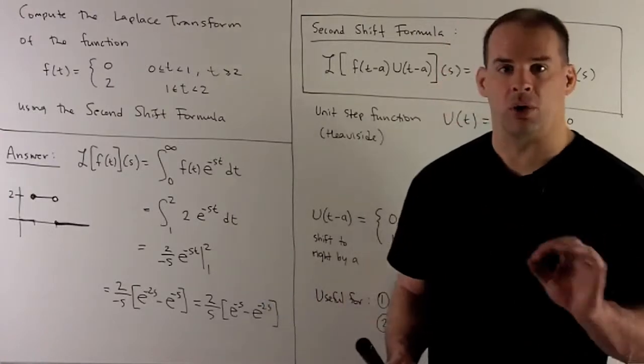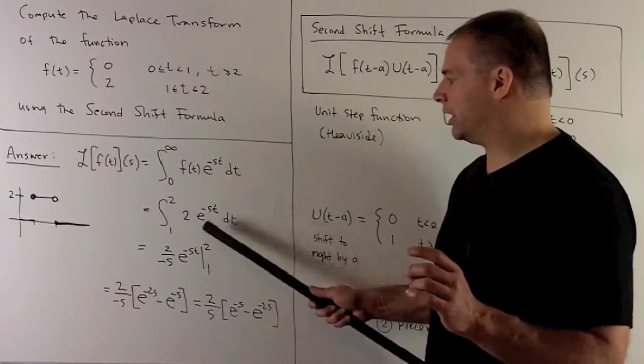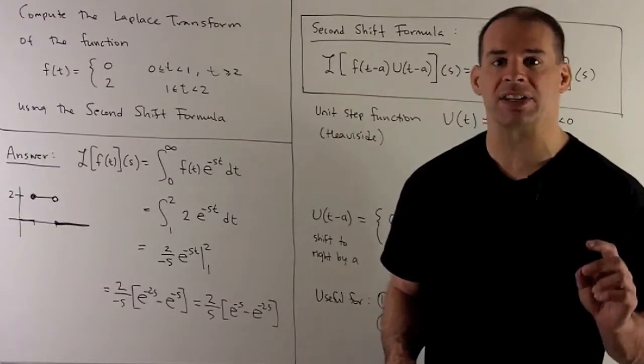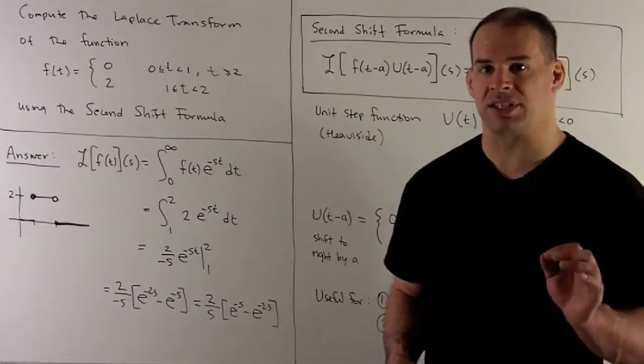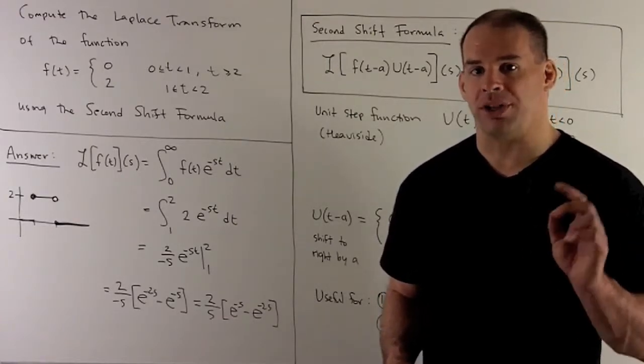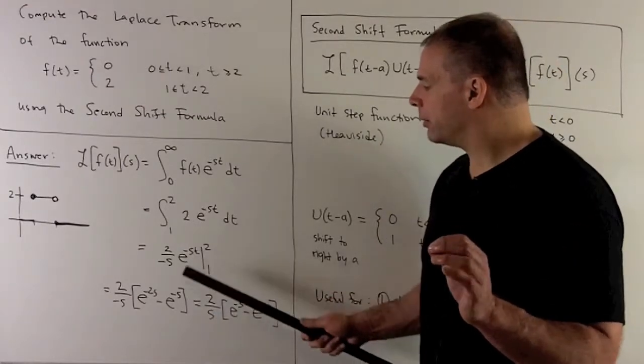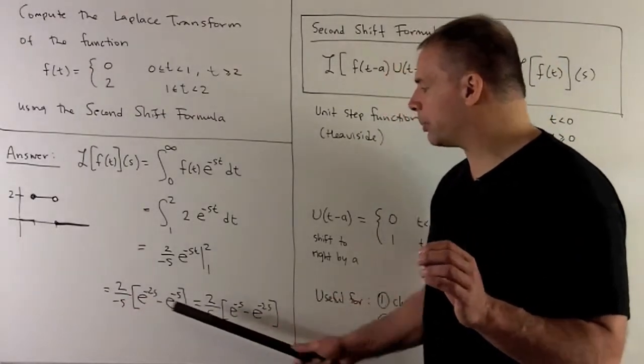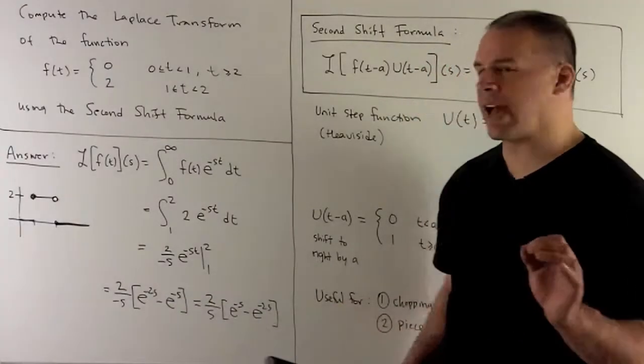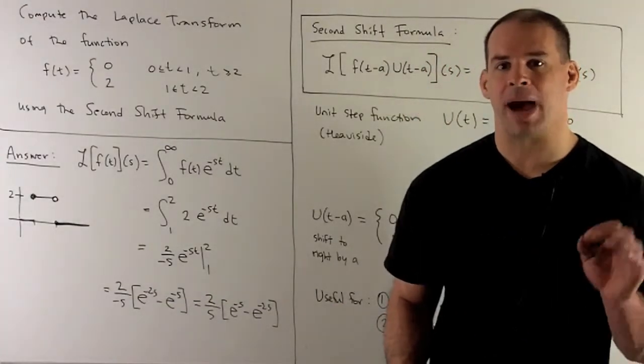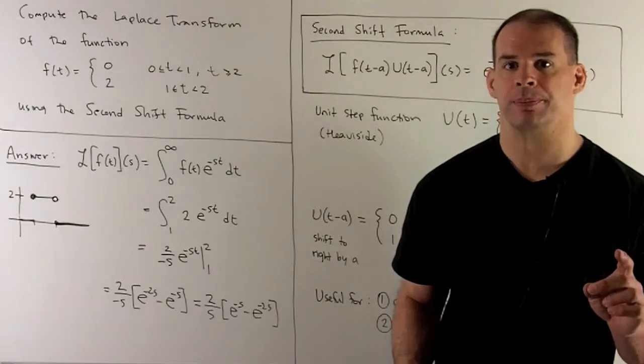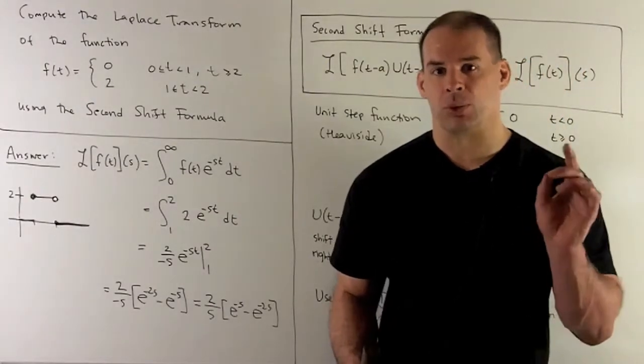So we integrate. Any derivative of 2 e to the minus st is going to be equal to minus 2 over s, e to the minus st. Then we evaluate at 1 and 2, take the difference. So when we're done, I'll clear up this minus sign here by pushing it through. We have 2 over s, e to the minus s, minus e to the minus 2s. So it's going to be our answer that we'll check later.